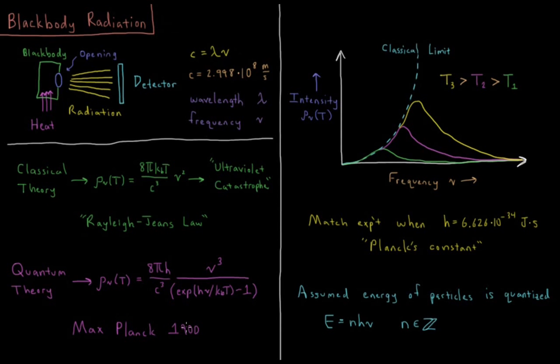Max Planck, in the year 1900, solved this problem by introducing quantum theory. The equation that he derived used the idea that maybe the energy levels inside this black box can't be any possible level, like classical theory says - maybe there's some quantized set of values which it's allowed to have for the energy of the particles inside this blackbody.